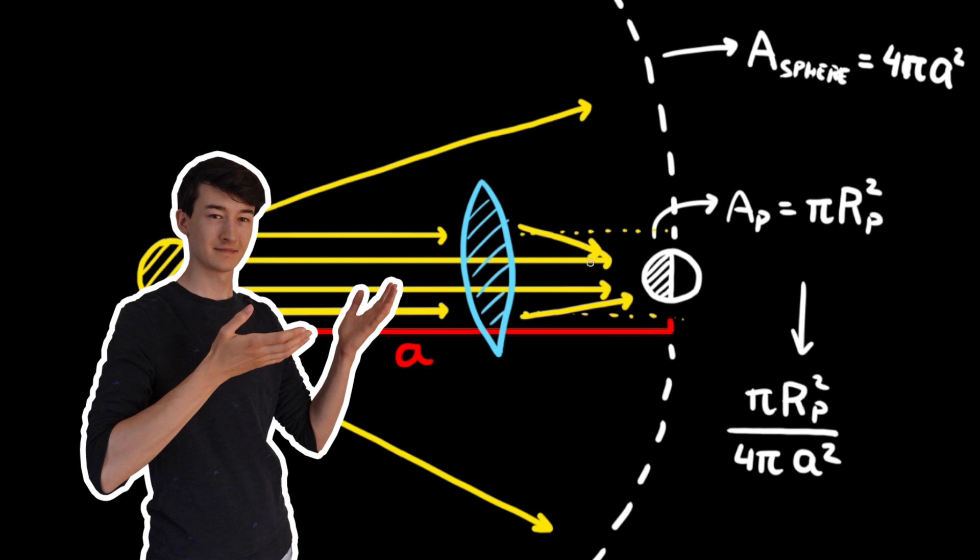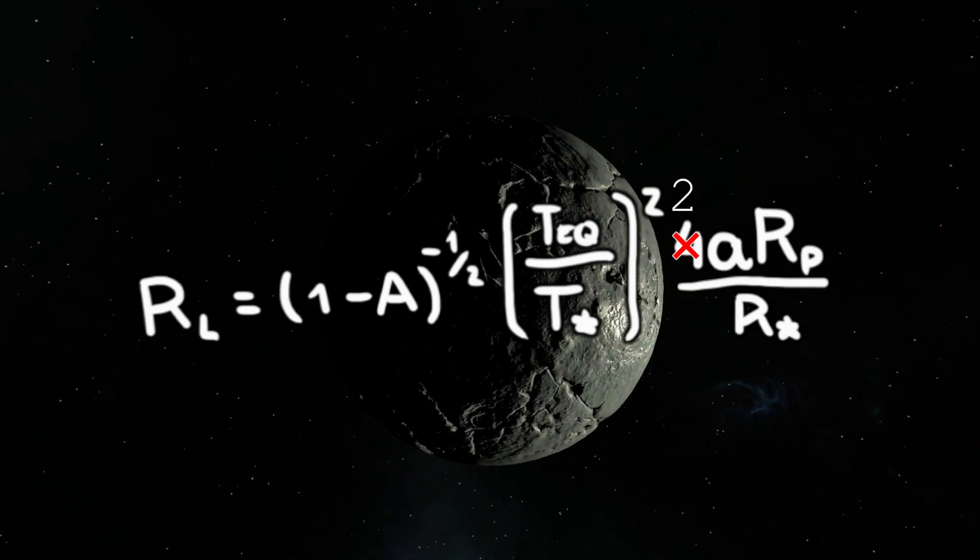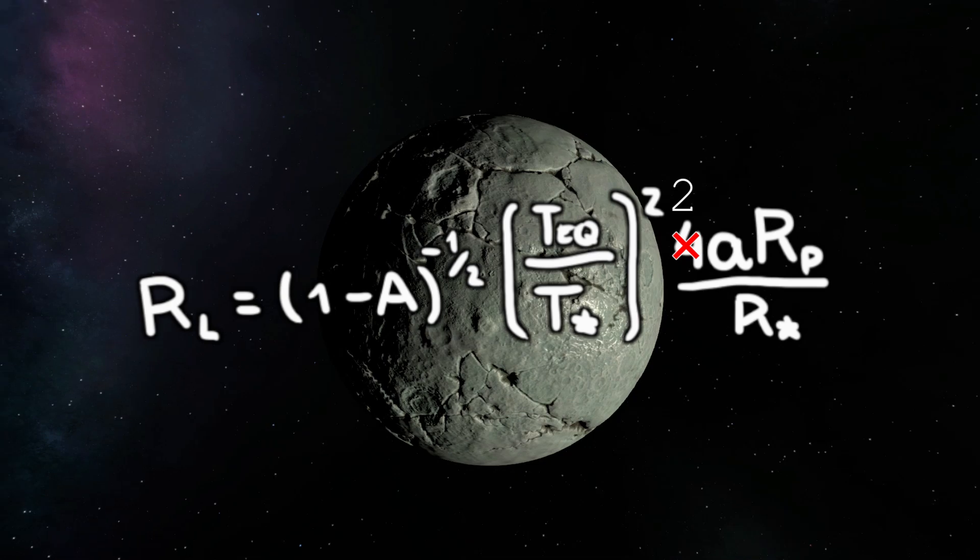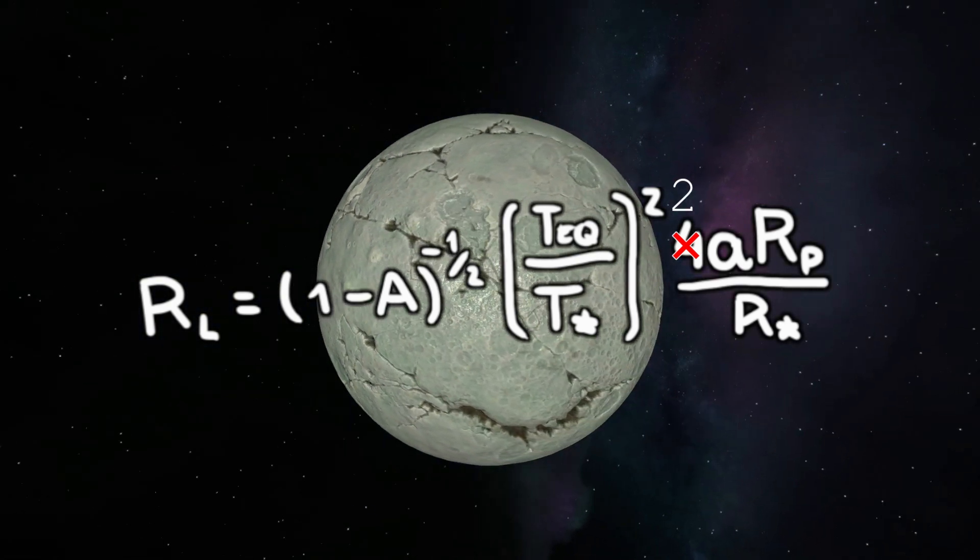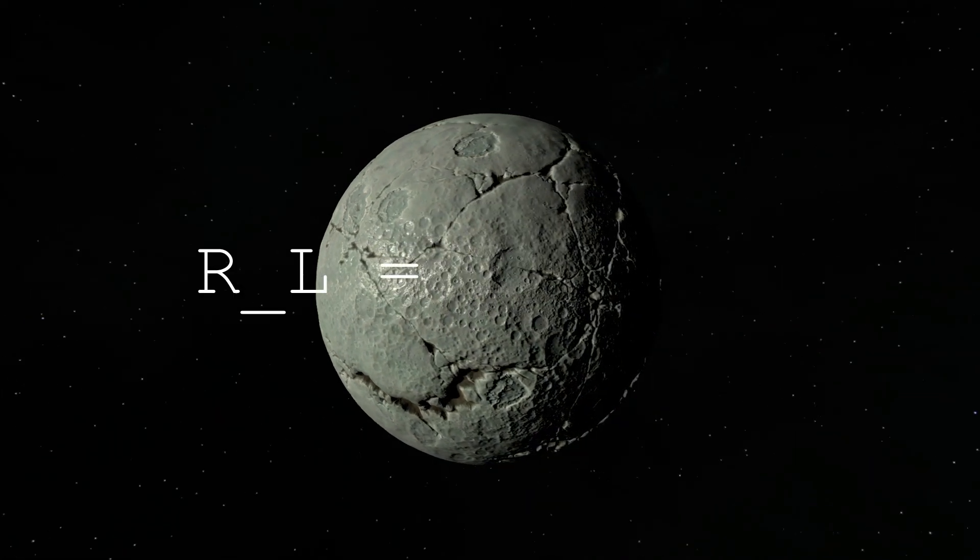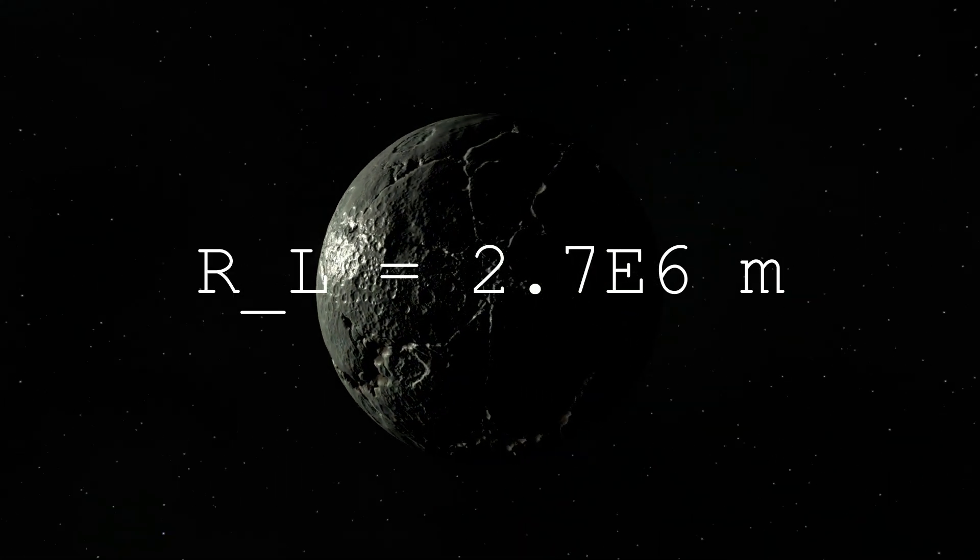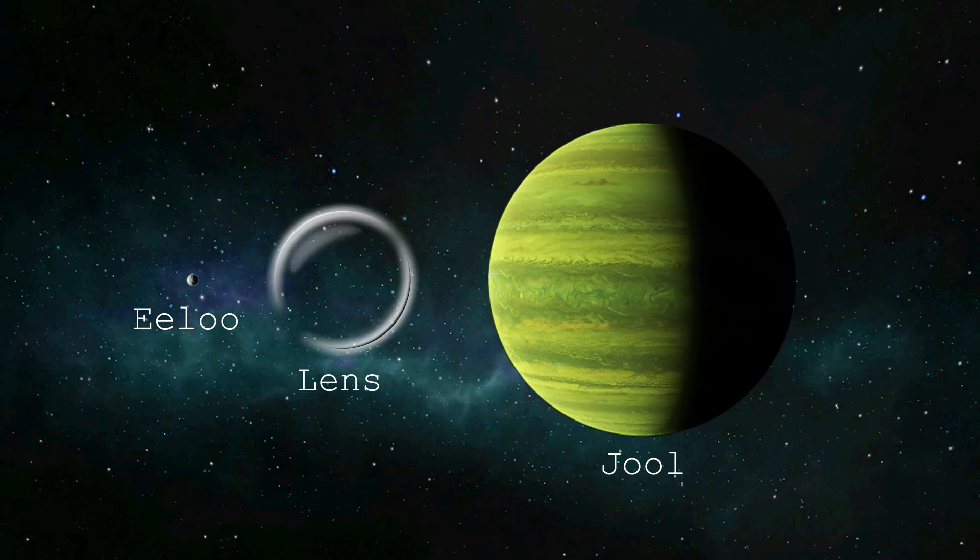Instead of having a frontal area of the planet catching the light, we have an entire lens doing the job. With some rewriting, we get an expression for the radius of the lens. So what would be the size of the lens if we want a surface temperature of 293 Kelvin? Well, plug this all in and we get a lens with a radius of about 2.7 million meters, which is about half the size of Jool.